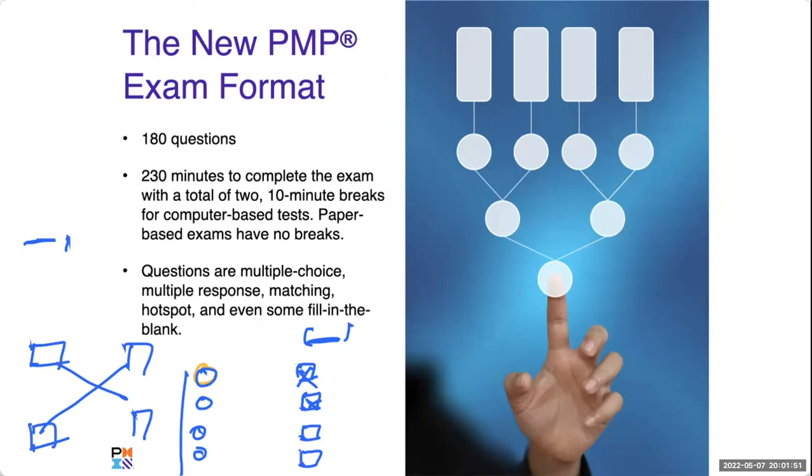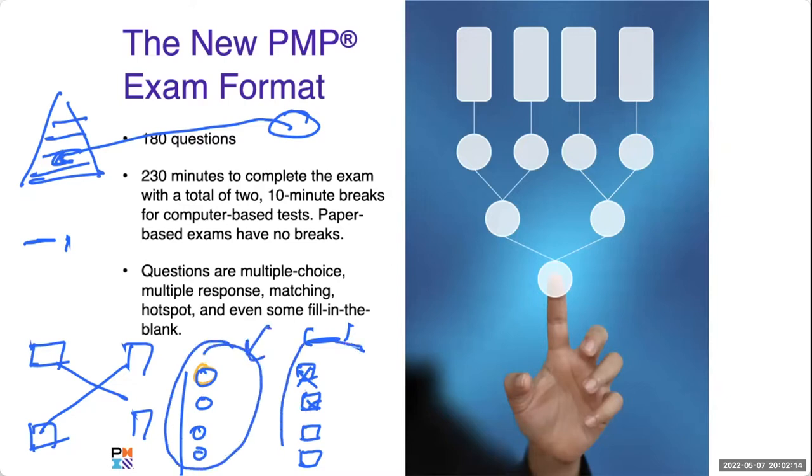Some questions are fill in the blank. Only one question is fill in the blank out of 180 questions. You would also have drag and drop questions, with items that you drag wherever applicable. Again, very minimal, one or two of these. The maximum set of questions, 80 percent, are multiple choice, and the other types would be around 19-20 percent. Drag and drop and fill in the blank are just one each.